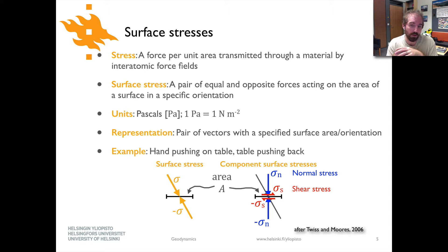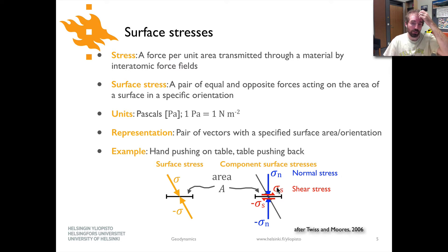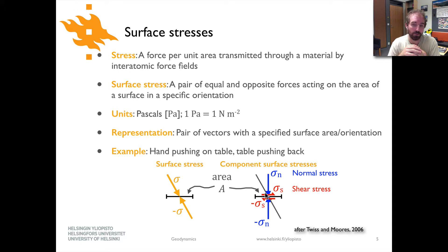Just like we did with forces, you can take components of stresses acting on some surface. The common convention is that the component perpendicular to the surface — shown in blue — is referred to as the normal stress, acting normal or perpendicular to the surface. The shear stress, indicated in red, is the component of the surface stress acting parallel to the surface itself. These are indicated as sigma n for normal stress and sigma s for shear stress, sigma being the small Greek letter.